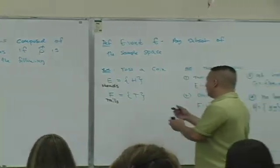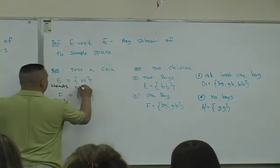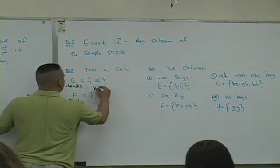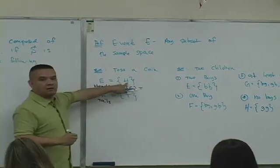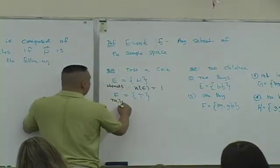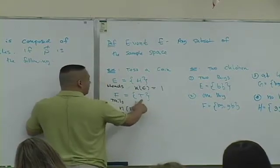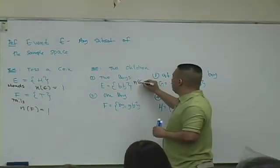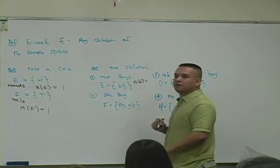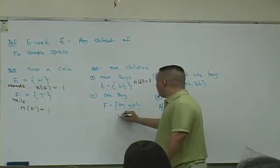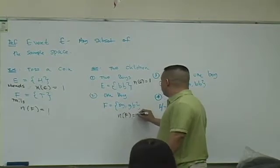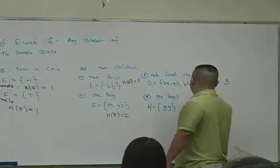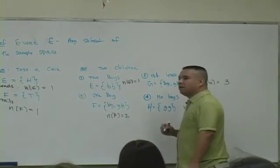Note, though — can you tell me what's N of E for the experiment when you toss a coin? How many outcomes are on this list? One. How many outcomes are on list F? One. How many outcomes are here? One. Good. How many outcomes are on list G? Good. How many outcomes are on list H? One. Good.